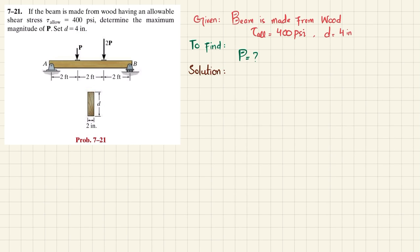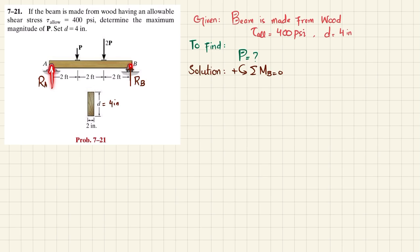Let's start with the solution. D is equal to 4 inches. If we remove the support at point A, we have a reaction force R_A, and removing the support at point B gives reaction force R_B. We'll find R_A and R_B using equilibrium conditions. The first equilibrium condition is the sum of all moments about point B equals zero, taking counterclockwise as positive.